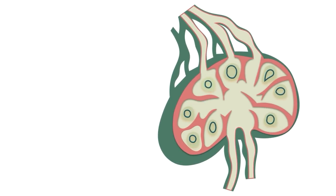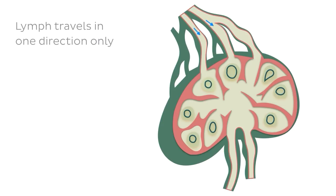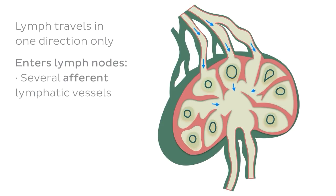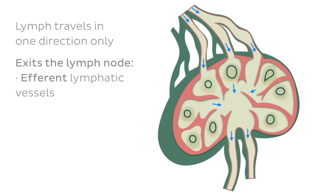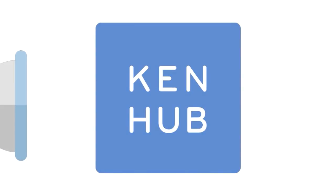To do so, we're going to be using this image here showing a section of a lymph node. As we mentioned, lymph travels in one direction only. Lymph enters into lymph nodes via several afferent lymphatic vessels and exits the lymph node via efferent lymphatic vessels. These efferent vessels are wider and fewer in number than afferent lymphatic vessels.